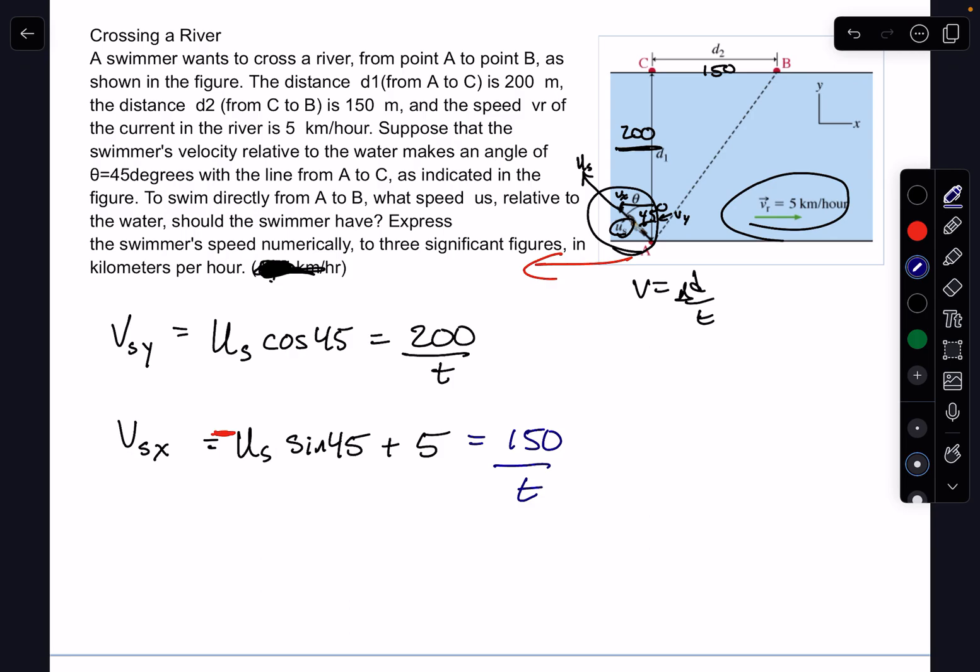Now I have two equations and two unknowns: Us and time. What I did is I rewrote these equations for time. For equation one, I got time equals 200 over Us cos 45. And for equation two, a little more complex,